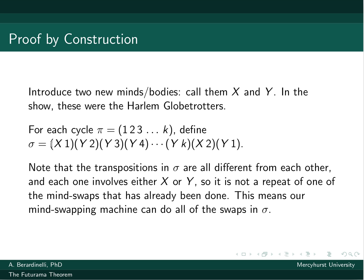But our mind swap machine will let us do all of these, because they're all different, and they all involve X or Y, and X and Y haven't been swapped with anyone yet. So these are all valid according to our mind swap rule if you can't switch the same pair of bodies twice.